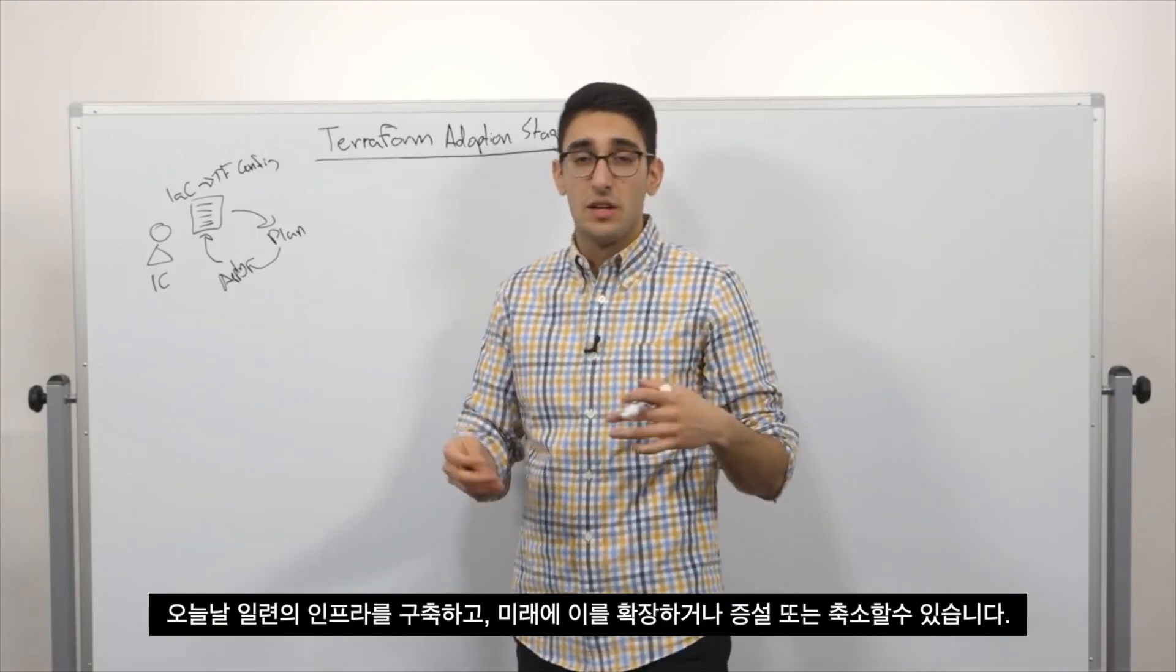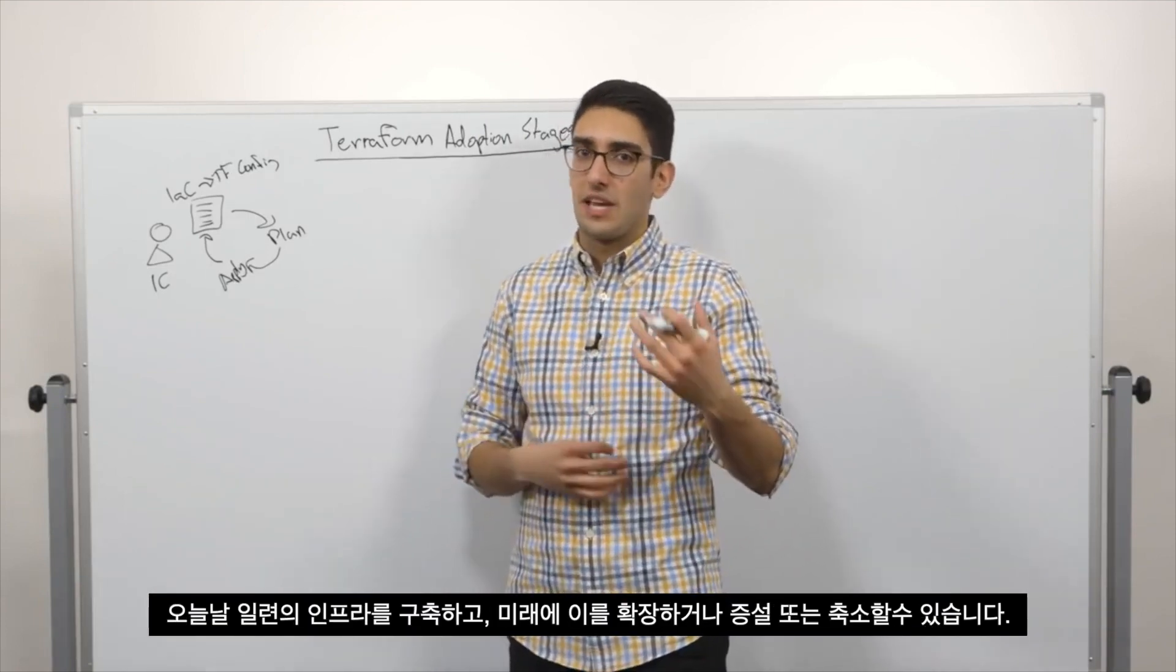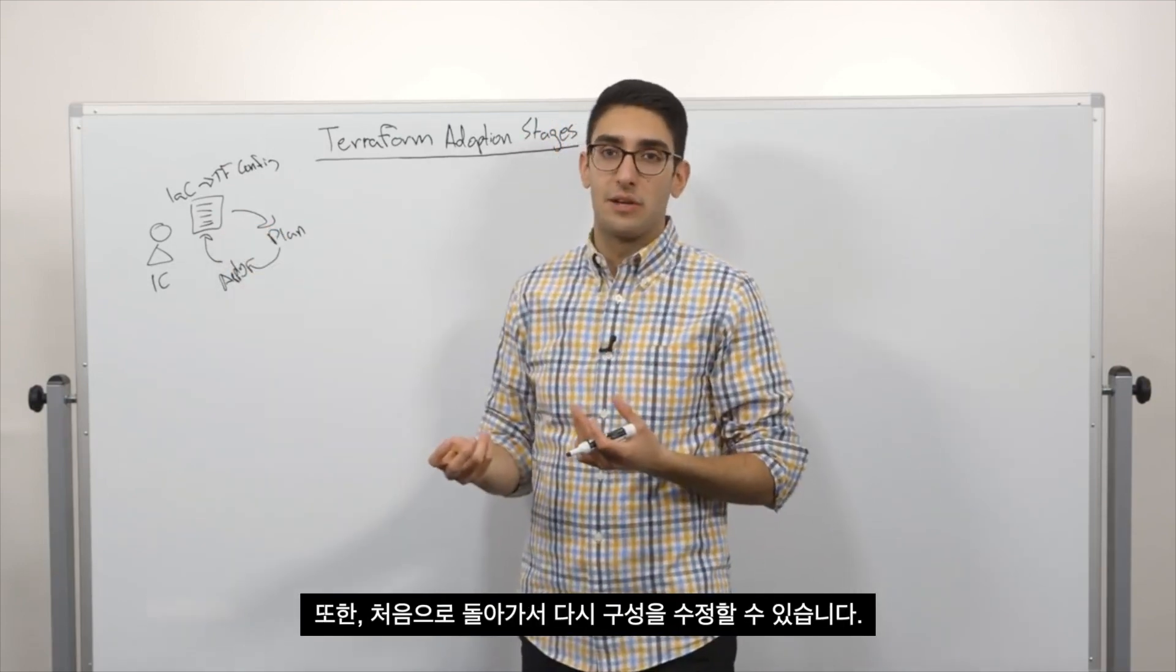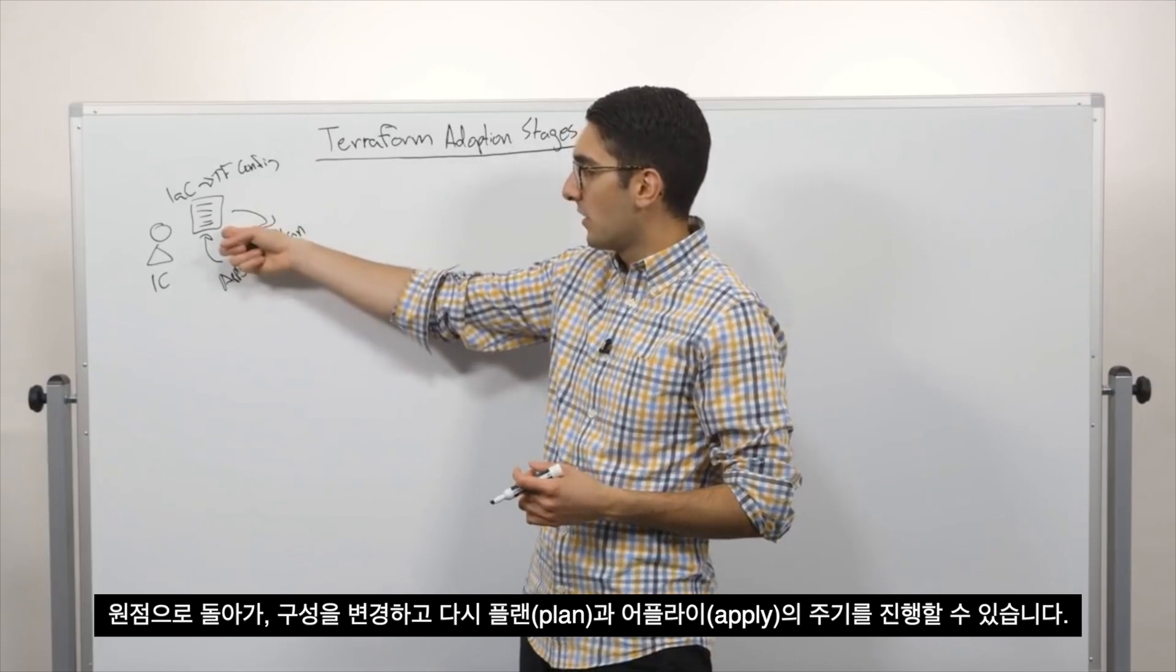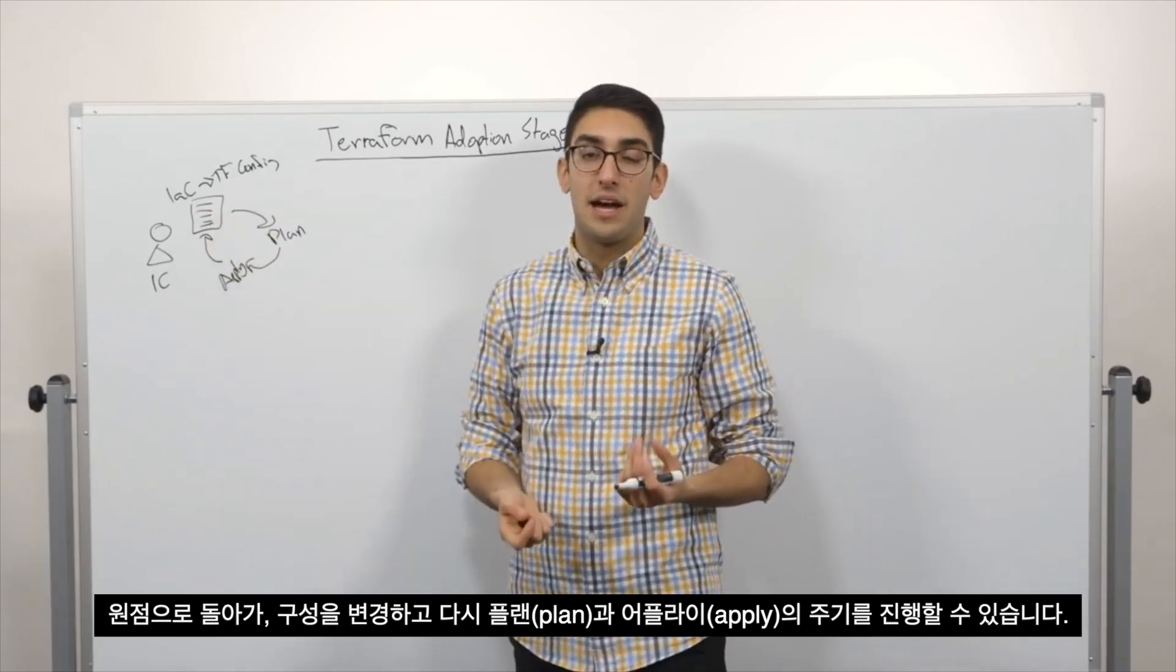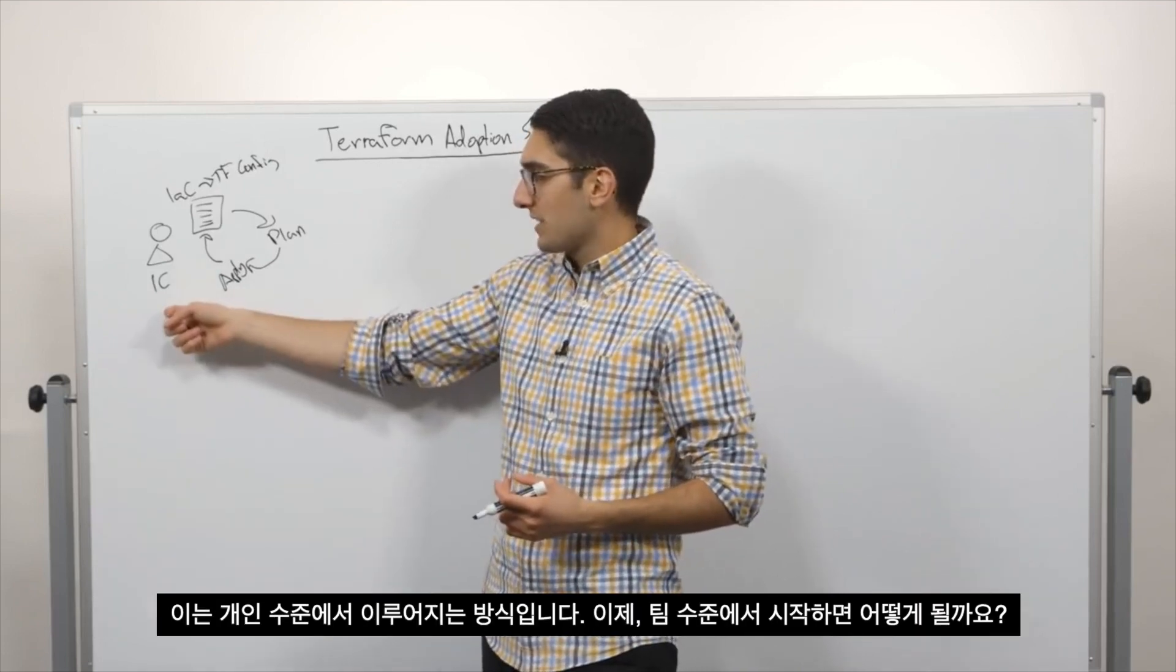So today you deploy some set of infrastructure. Tomorrow you decide to extend it or scale it up or scale it down. And so you go back to the beginning and modify this configuration again. So we go back to the origin, change our configuration, and again flow through our plan and apply cycle. This is what it looks like as an individual.